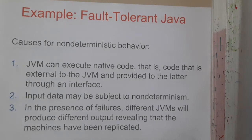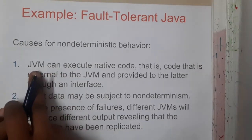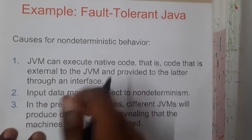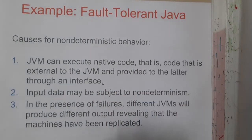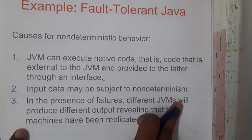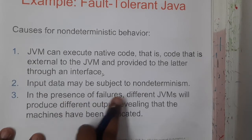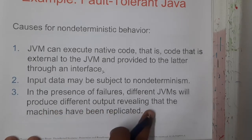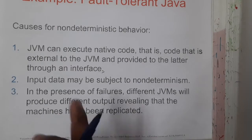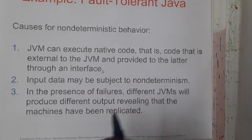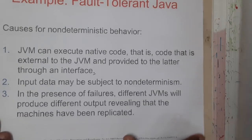Similarly, for Java we also have fault tolerance — that is EJB. The JVM, that is the Java Virtual Machine, can execute native code that is external to the JVM and provides it through an interface. Input data may be subjected to non-determinism. In the presence of failure, a different JVM will produce different outputs, revealing that the machine has been replicated. If you query multiple servers, there is a chance you get different data from the same replicated objects.